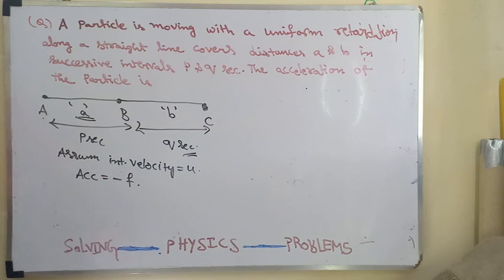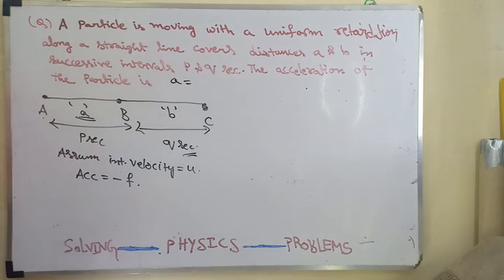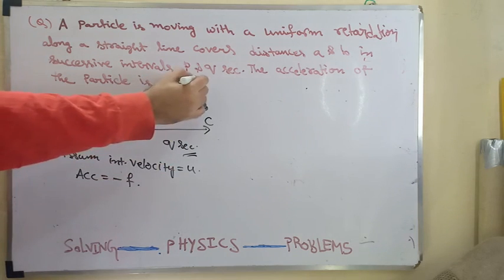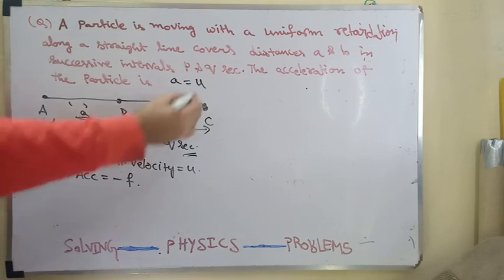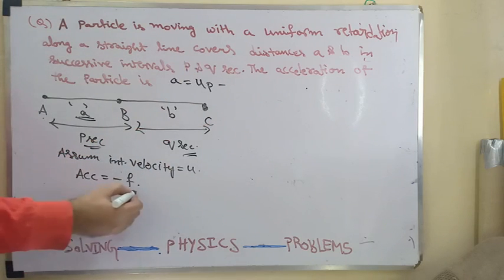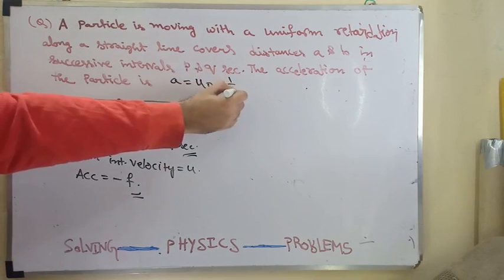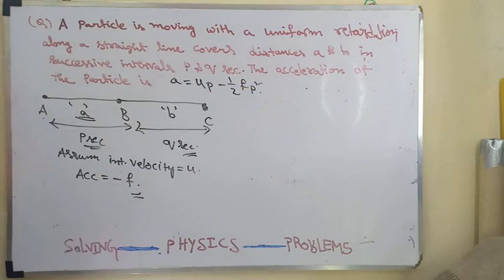Now we apply the equation for the first condition. A is equal to U t. That is U, we assume the initial velocity U. Time is P seconds to cover, so U P minus, acceleration is negative in nature, so minus half F P square. This is the distance.